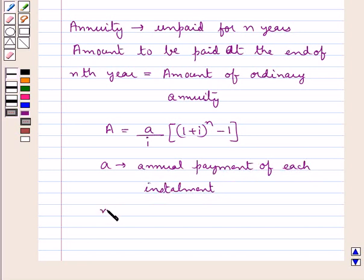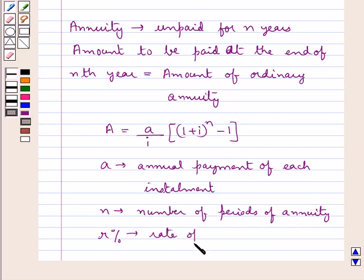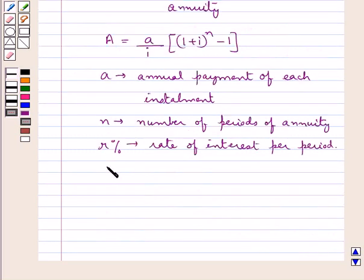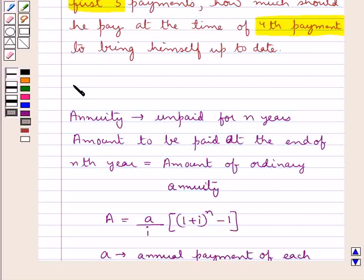N is the number of periods of the annuity. R percent is the rate of interest per period and i is equal to R/100, which is the interest of $1 for the same period. This is the key idea that we use in this question.